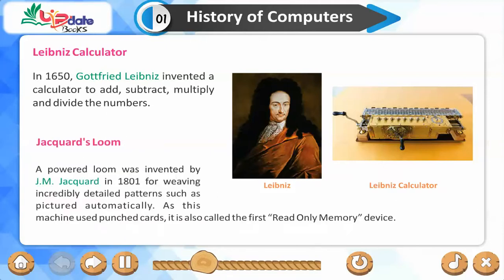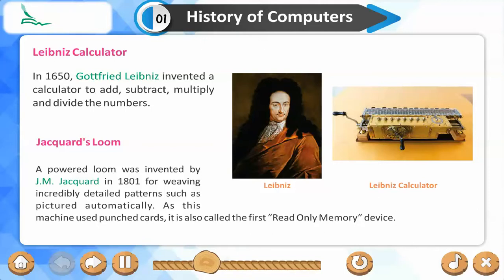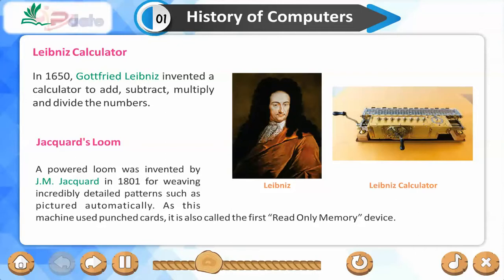Jacquard's Loom. A powerful loom was invented by J. M. Jacquard in 1801 for weaving incredibly detailed patterns automatically. As this machine used punch cards, it is also called the first read-only memory device.